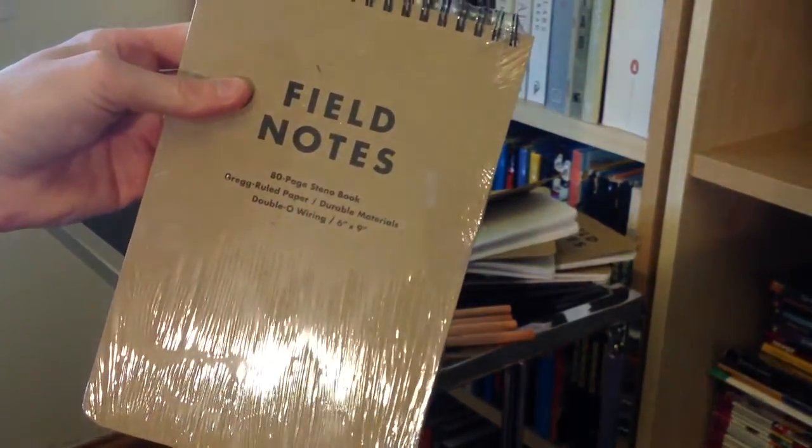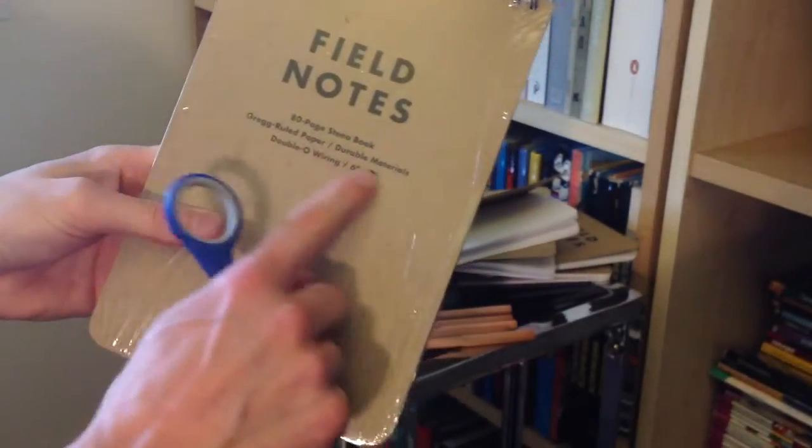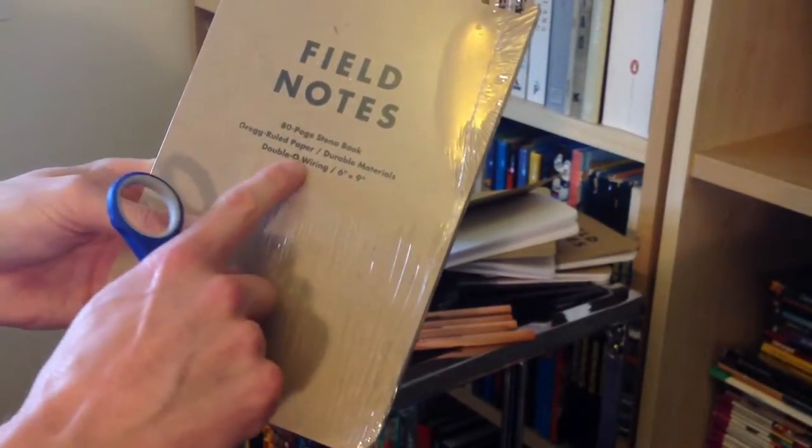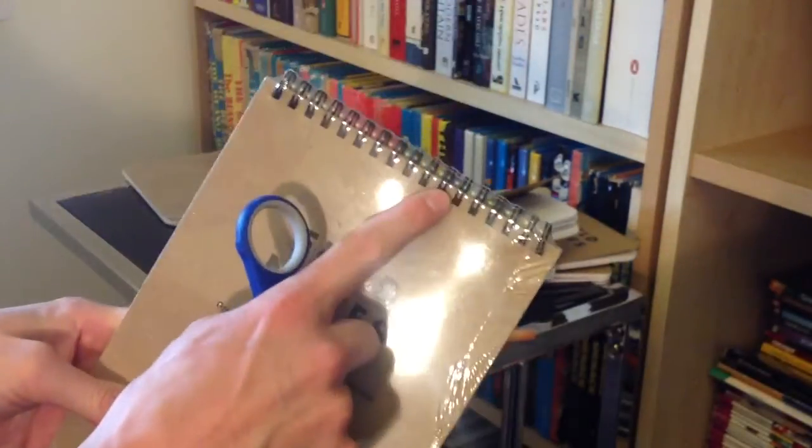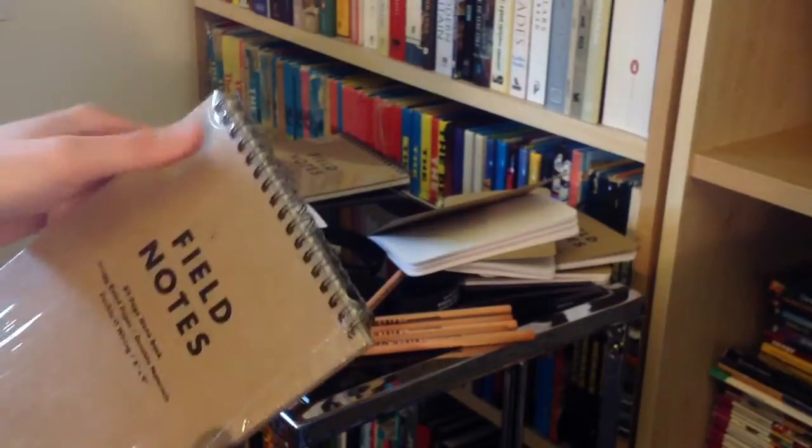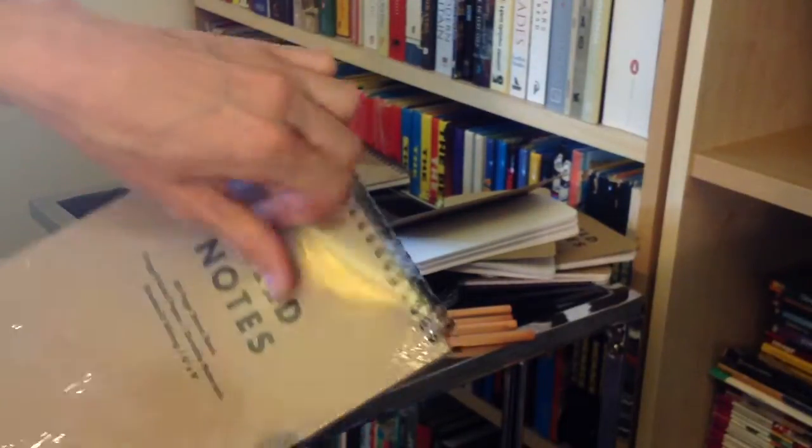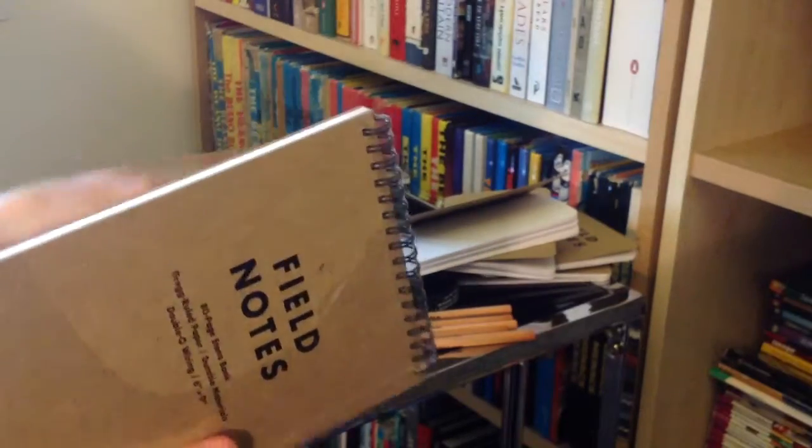But if we have ourselves a final look now at the Steno book. As you can see, this is an 80-page Steno book. Greg-ruled paper, durable materials, durable O-wiring at the top there. If we flip it around to the back here, you can see, once again, nice plain back. Nice minimalism all the way through the brand. If I can cunningly get into this. A nice little slip to the top there. I'm impressed by that, you can tell.